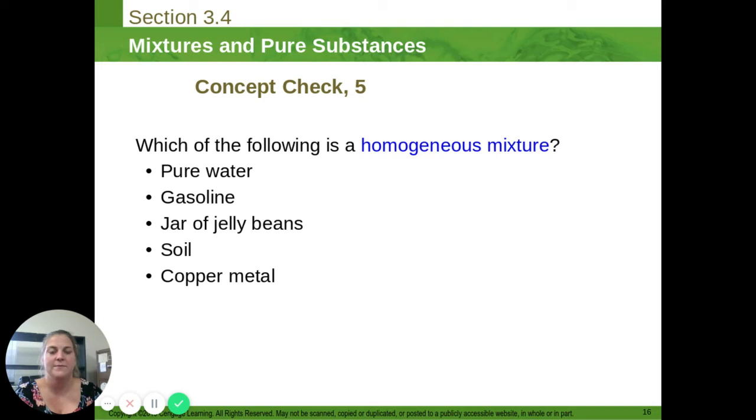Hopefully we picked gasoline for this because water is a pure substance. It's all one type of thing. So it, in theory, looks the same throughout, but it doesn't qualify as a homogeneous mixture because it's not a mixture. Gasoline is a mix of a lot of things. If you just didn't know that gasoline was a mix of things, I'll forgive you for getting this one wrong. But it is a lot of different things. But if you look at a can of gas, the gas looks the same throughout. Jar of jelly beans does not look the same throughout. You're going to have red ones and yellow ones and green ones. Soil is a mix of a lot of things, not homogeneous. And copper metal is not a mixture. It is a single element. So that's a pure substance.